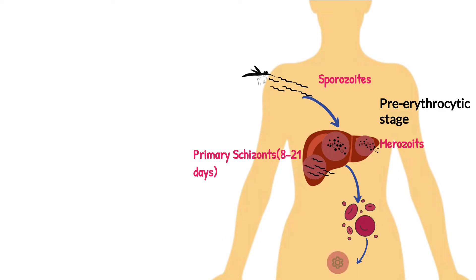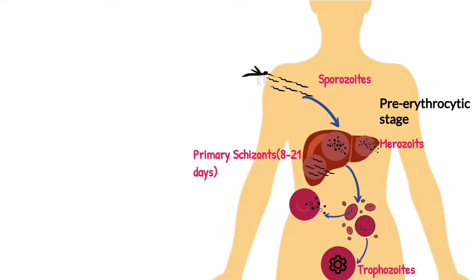Once inside the RBC, these merozoites form a ring-like structure called trophozoites. Trophozoites have two phases. Most of the trophozoites begin the asexual cycle to give rise to new merozoites. The number of merozoites produced in the RBC is too large for the RBC to contain, hence it bursts and releases merozoites. The released merozoites can then attack new RBCs and keep increasing their population. At this point, the clinical attack of malaria is manifested by chills, fevers, and sweating.